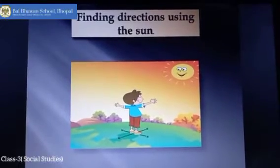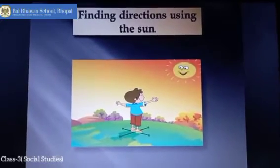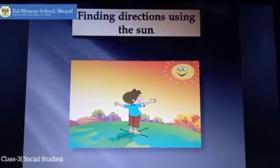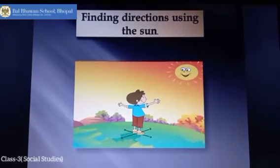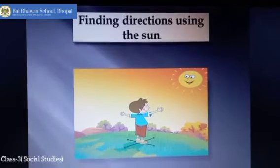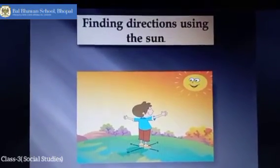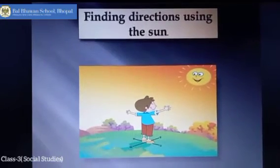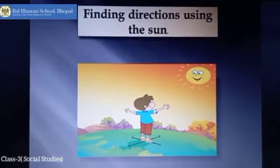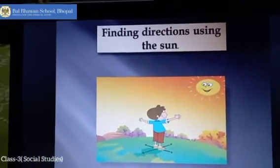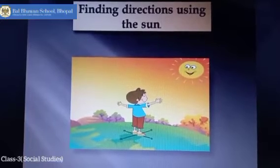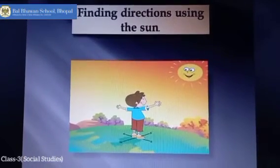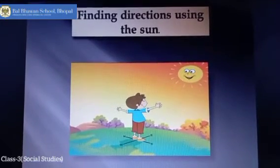We can also find directions using the sun. As you all know, the sun rises in the East. Once you know where East is, you can find the other directions. This is the picture of Jai. As you can see, Jai is standing facing the rising sun — that means East is in front of him, West is behind him, North is to his left, and South is to his right.